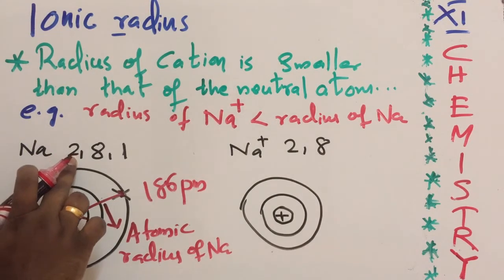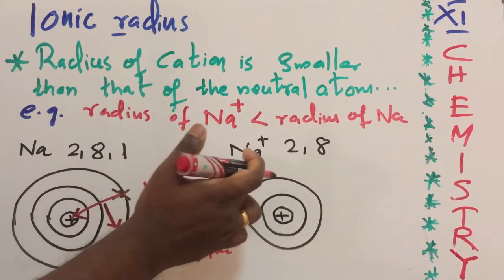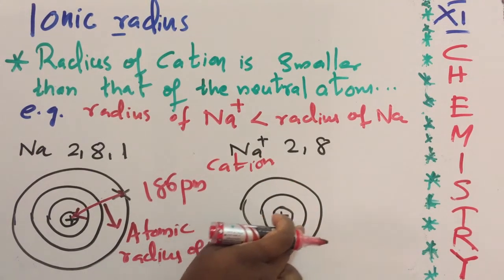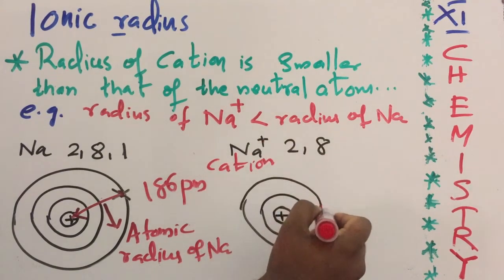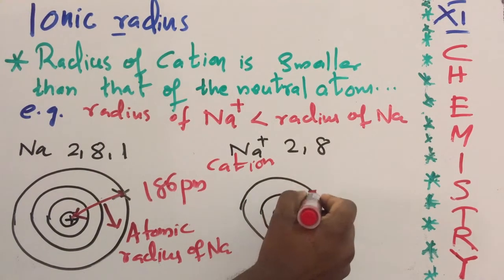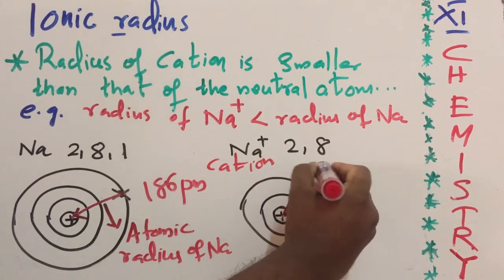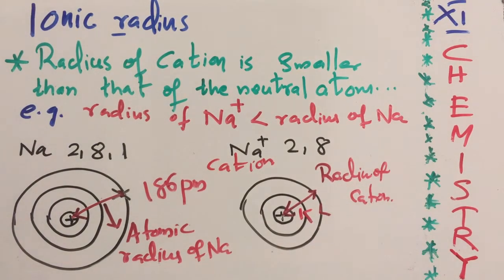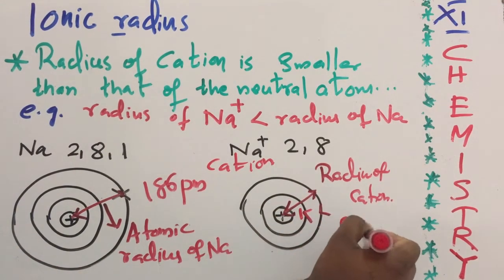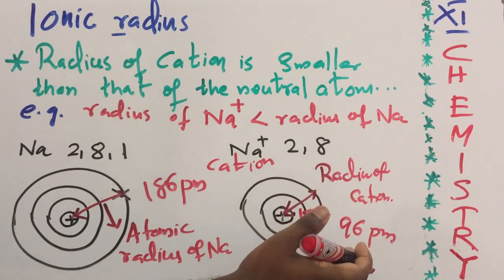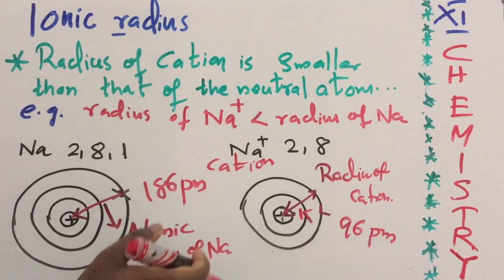When sodium loses one electron, it forms the sodium ion, also called a cation. In the Bohr model of Na+, the K shell contains 2 electrons and the L shell contains 8 electrons. The radius of this cation — the distance from the nucleus to the outermost shell — is just 96 picometers, which is less than the radius of the parent sodium atom.